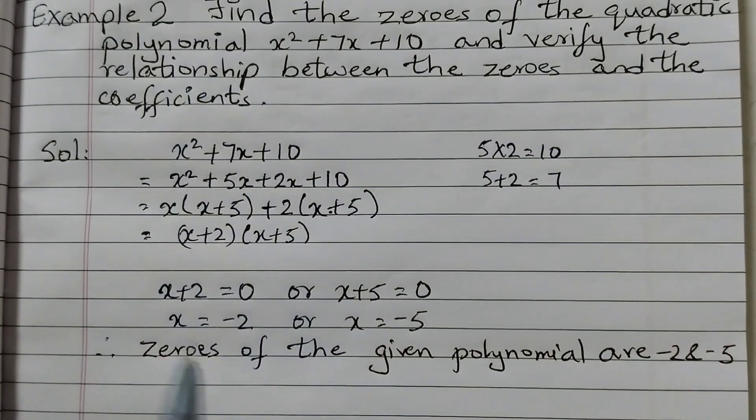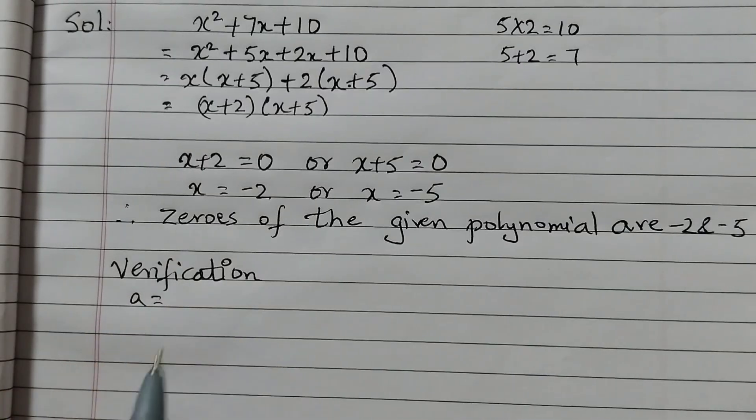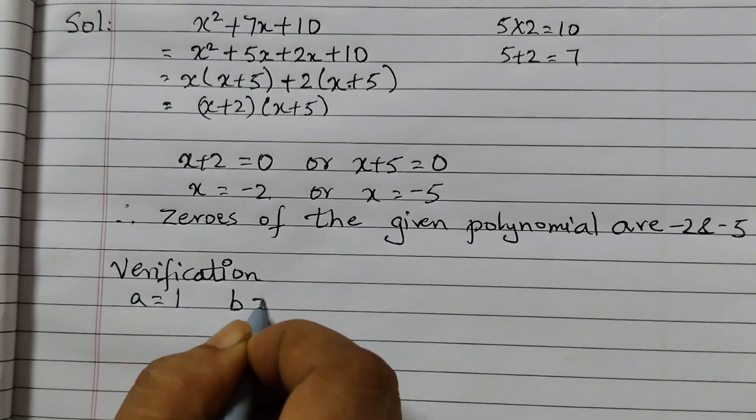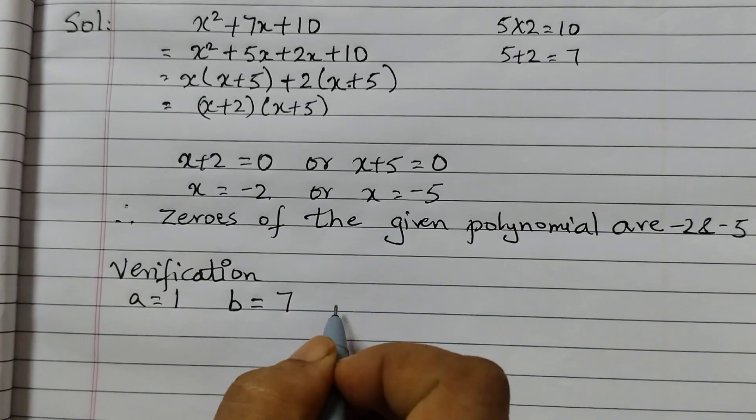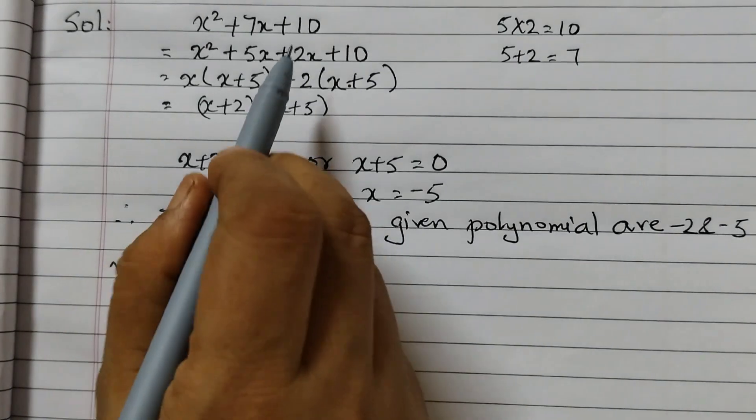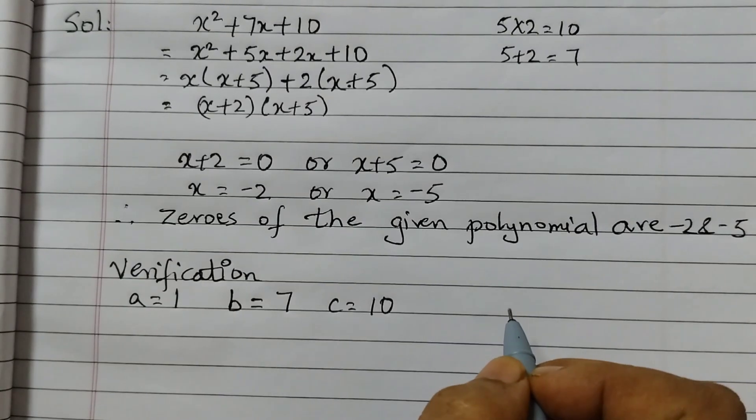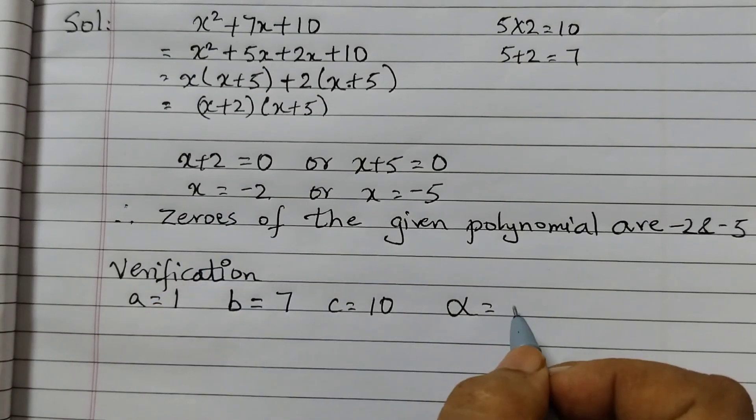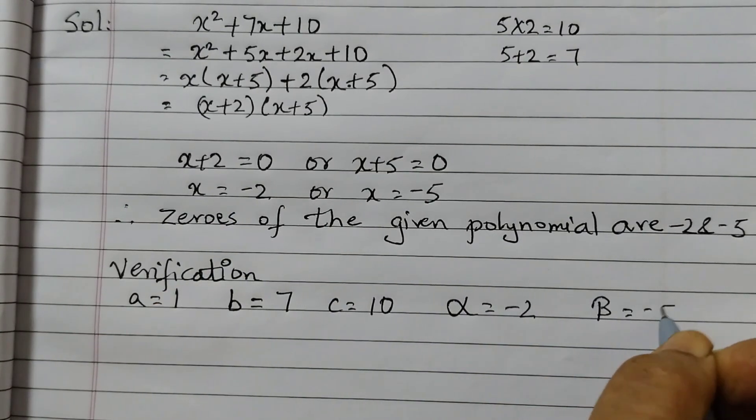Now we need to verify the relationship. So we will do verification. A is equal to the coefficient of x squared which is 1, B is equal to coefficient of x which is 7, C is equal to the constant term 10 and the zeros of the polynomial is represented by alpha and beta. So we can take alpha is equal to minus 2 and beta is equal to minus 5.